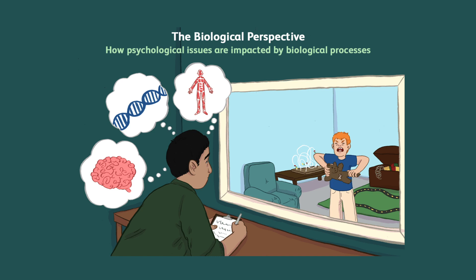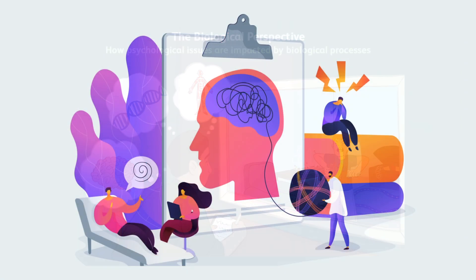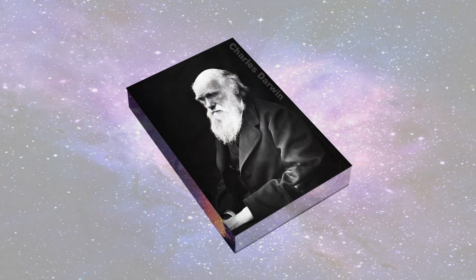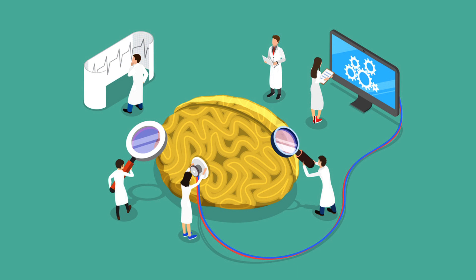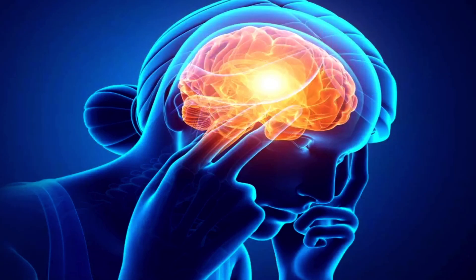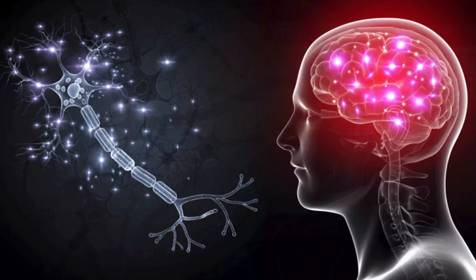The biological perspective is essentially a way of looking at human problems and actions. The study of physiology and biological processes has played a significant role in psychology since its earliest beginnings. Charles Darwin first introduced the idea that evolution and genetics play a role in human behavior. Biopsychology studies how biological processes influence the mind and behavior.